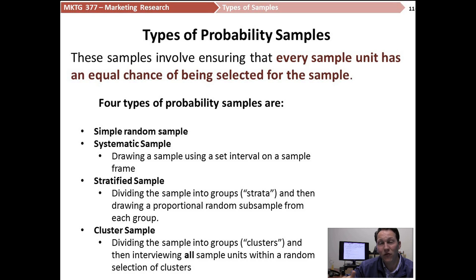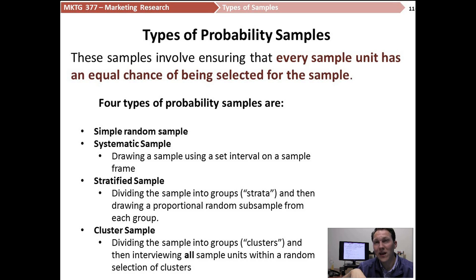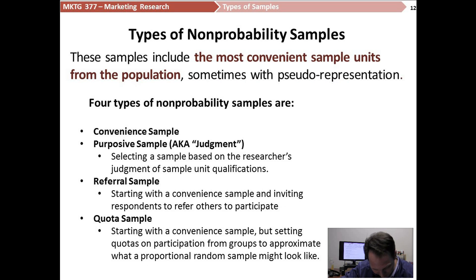Most of the time, simple random samples and stratified samples are the way to go. A simple random sample just makes sense and is really easy to do. A stratified sample is essentially a simple random sample with the added bonus of ensuring one or two groupings are properly represented — you split the random sample into a few pieces, randomly sample those pieces, and put it all back together. A cluster sample, on the other hand, is like having a whole loaf of bread, taking out a few slices randomly, eating those, and saying you ate the whole loaf — a bit difficult to wrap your head around for marketing research.